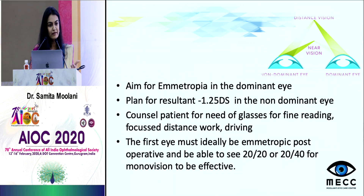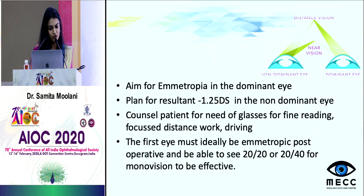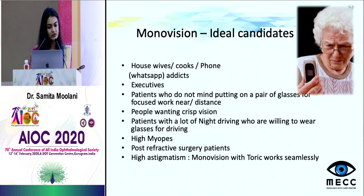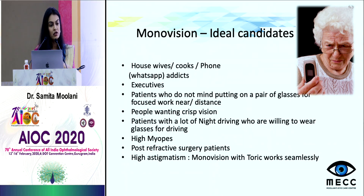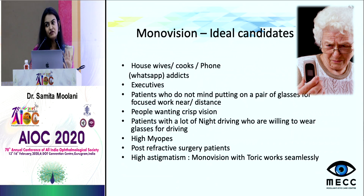Our principles: Always aim for minus 1.25 in the non-dominant eye. The ideal candidates for monovision are housewives, cooks, WhatsApp addicts — people who don't mind glasses for focused work but for most of the time don't want to be dependent on glasses. Those who want crisp vision and don't mind glasses. Patients who have a lot of night driving and don't mind glasses just for driving are ideal for monovision. High myopes and post-refractive patients do very well with monovision, as we can't give them multifocal. High astigmatism monovision with toric IOLs works beautifully — about 70% of our monovision group uses toric lenses.